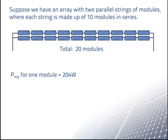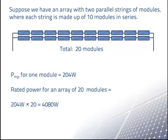Since our array has 20 modules, the rated power of the array is 204 watts times 20 modules, or 4080 watts.